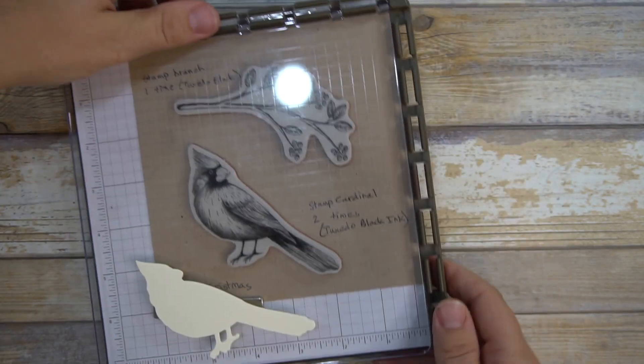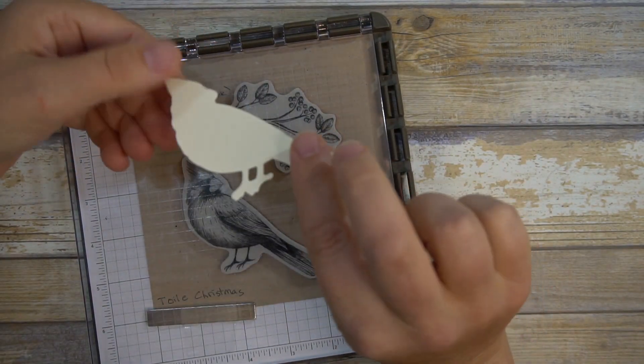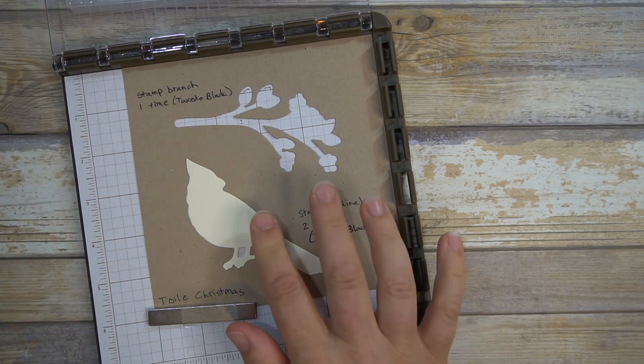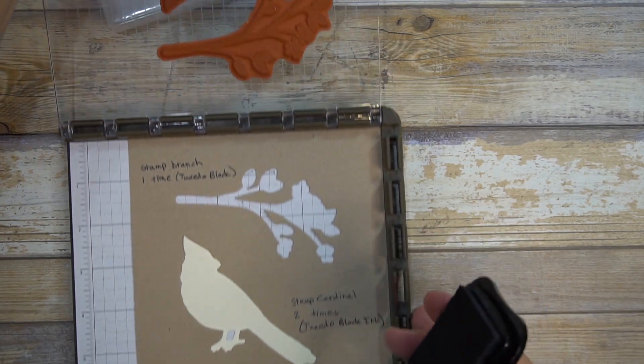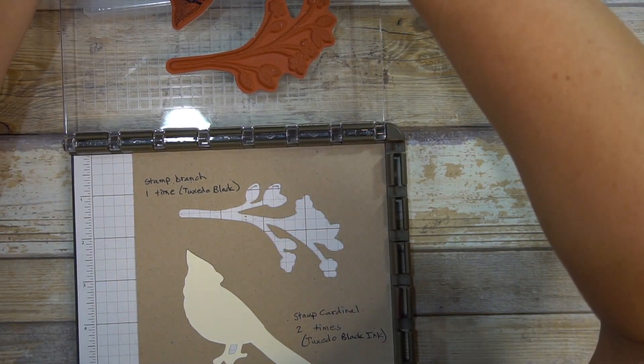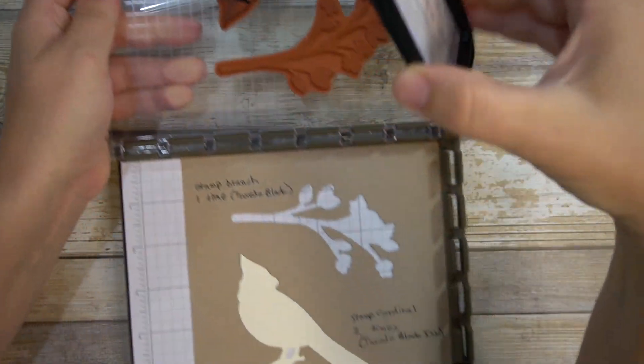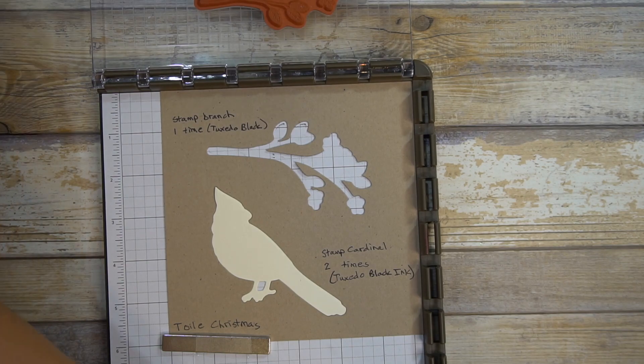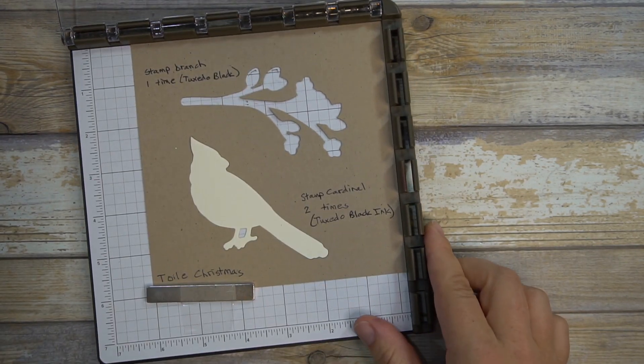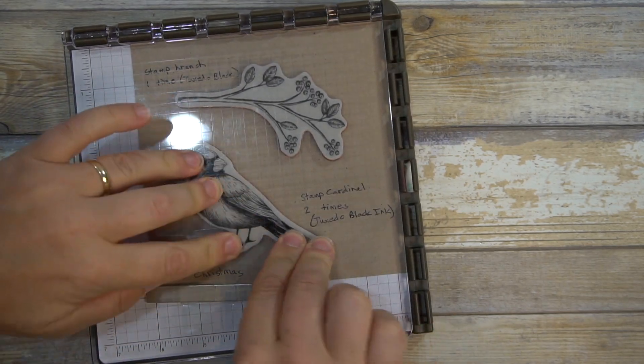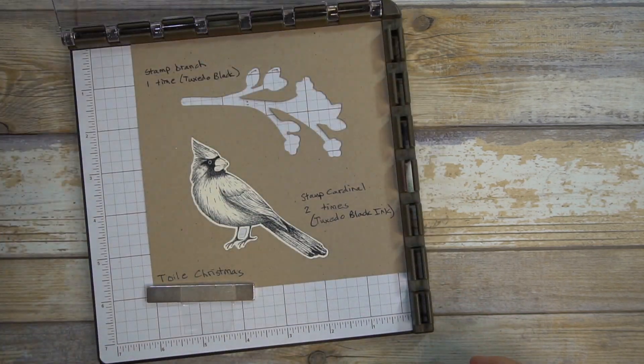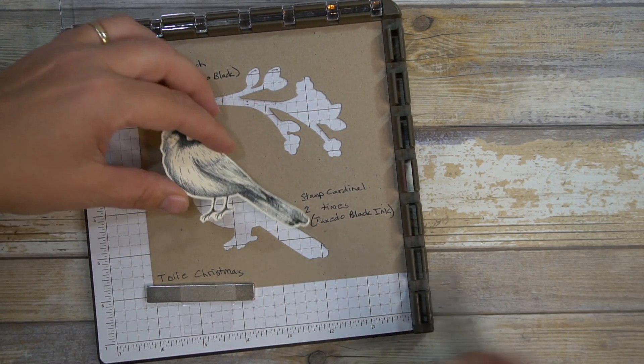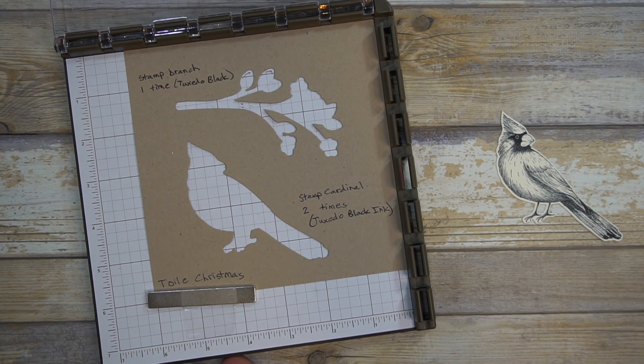So first thing first we're going to bring in the Stamparatus and I've already die cut out the image, the die cut of the bird. I'm just going to pop the bird right in here and ink up the bird. You want to make sure you ink up especially this part around his eyes, that will look much better if you have that well inked. I'm just going to pop this out and let it dry a little before I start coloring.